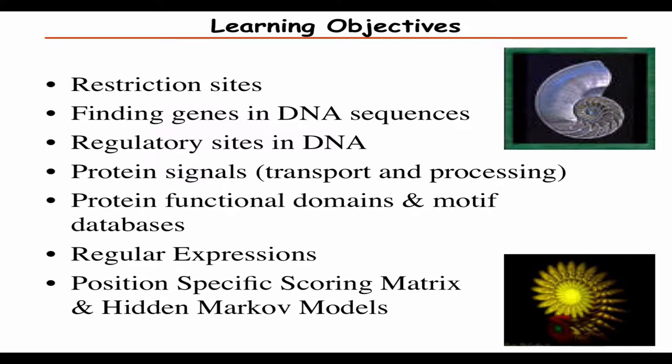The things I want to cover today are restriction sites, which are really simple patterns; gene finding, only going to go into that at a cursory level; regulatory sites in DNA like transcription factor binding sites; protein signals, like relatively simple patterns in protein sequences; protein functional domains and motifs; regular expressions, which is a way of looking for patterns; position-specific scoring matrices, which relates directly to multiple alignment methods; and hidden Markov models, which most of you are not very familiar with, so I'll spend a decent amount of time on that.